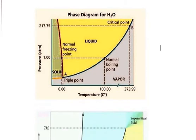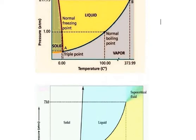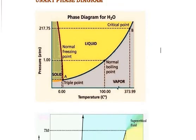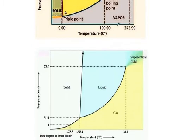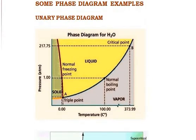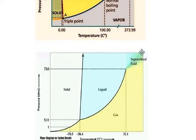Before moving to the binary phase diagram, let's look at another unary phase diagram example — the phase diagram for carbon dioxide. Take a look and tell me whether you've spotted a difference between the phase diagram for carbon dioxide and the phase diagram for water. In the phase diagram for water, the slope of the line separating the solid and liquid regions is negative — it goes downwards. While for the phase diagram for carbon dioxide, it goes upwards, increasing progressively.